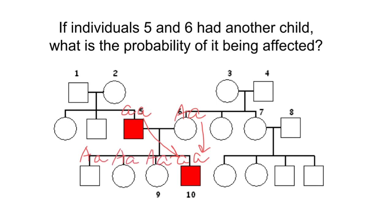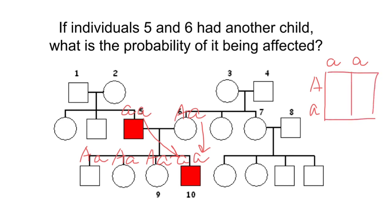We know that the father has genotype small a, small a, and the mother has genotype capital A, small a. We can build a simple Punnett square to find the probability in this family of getting an affected child.